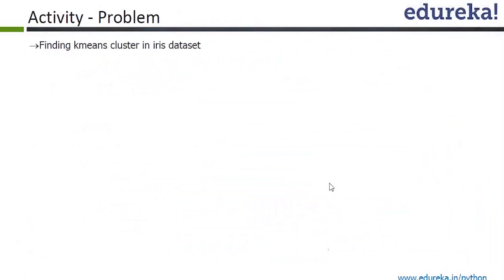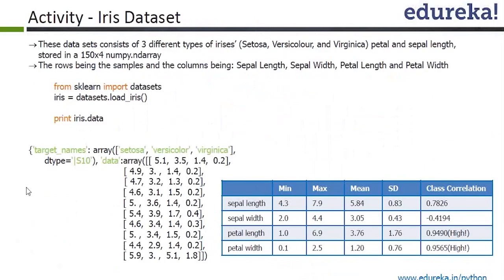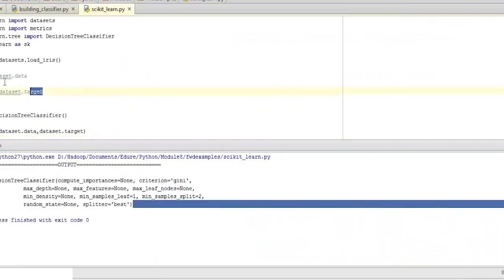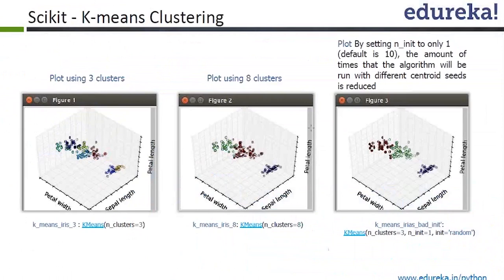Now, you know what an iris dataset is — I just explained how the iris dataset looks like. There is one activity: sepal length, sepal width, petal length, and petal width, with minimum, maximum, mean, and standard deviation. 0 is setosa, 1 is versicolor, and 2 is virginica. We will now plot a k-means clustering using scikit-learn. You've seen what k-means is and you know the logic behind it. We'll plot using three clusters and also plot using eight clusters.